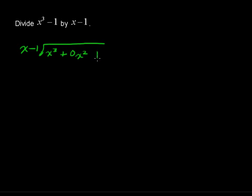We're also missing an x term. So I'm going to put in another placeholder, 0 times x. That's just 0. I'm not adding or subtracting anything from this polynomial here. Okay, we also have minus 1.